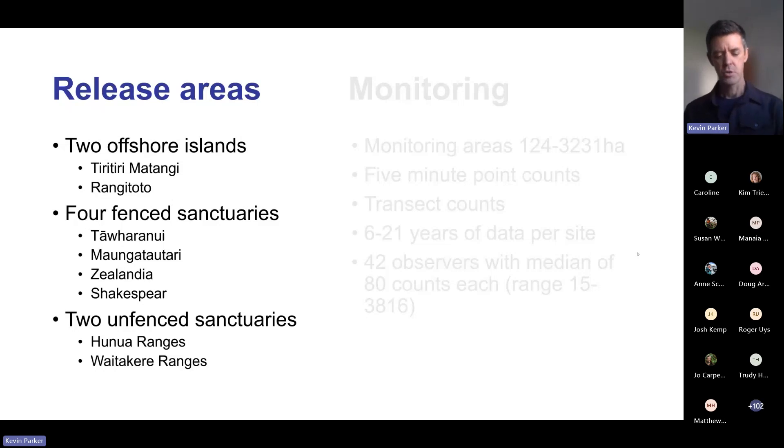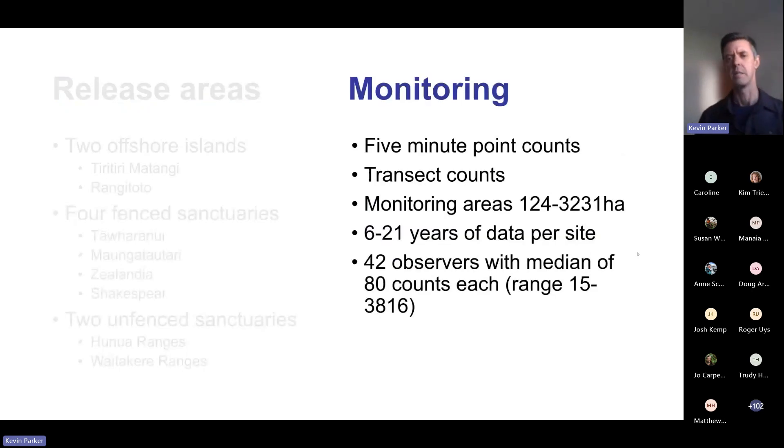We were quite interested in why that translocation failed even though there was good pest control in place. We were interested in the degree to which connectivity might be impacting translocation outcomes. Of the 21 sites, we had eight sites we used for the analysis I'm presenting today. These include two offshore islands, four fenced sanctuaries - Tawharanui, Mangatauteri, Zealandia, and Shakespeare - and two unfenced sanctuaries in the Hunua and Waitakuri ranges.